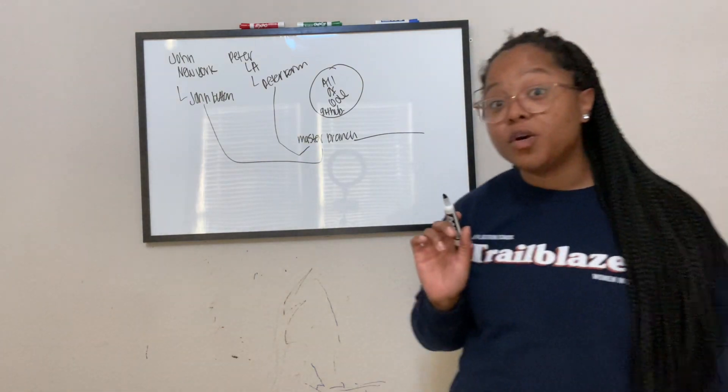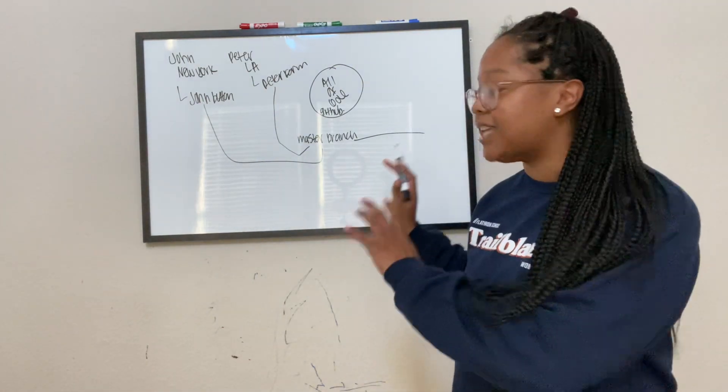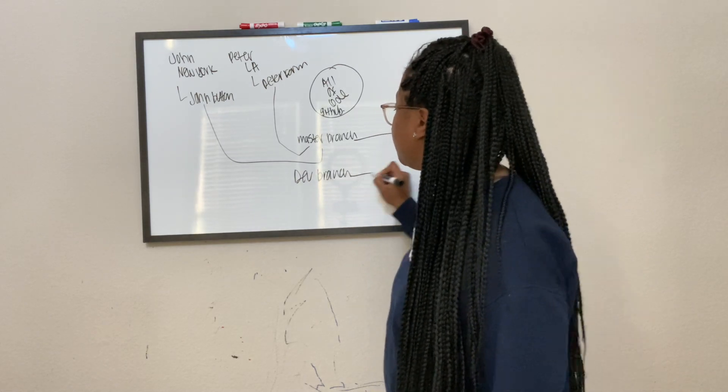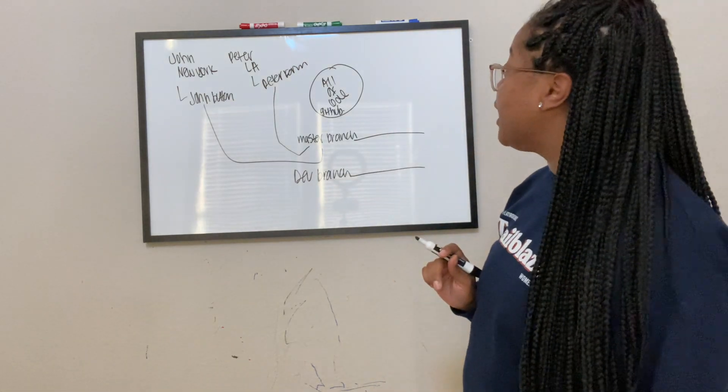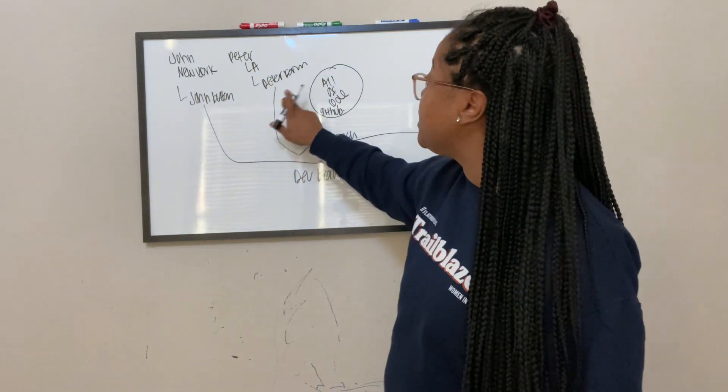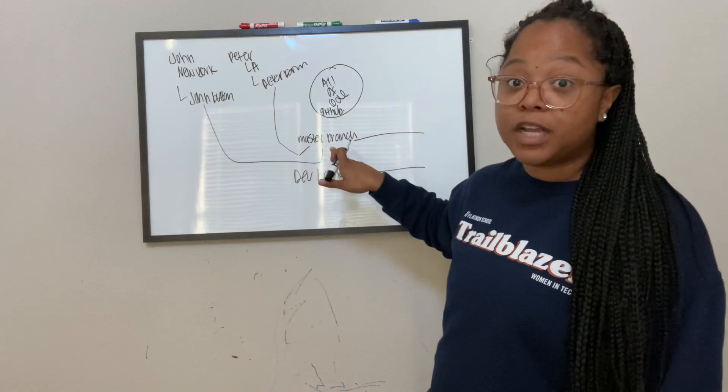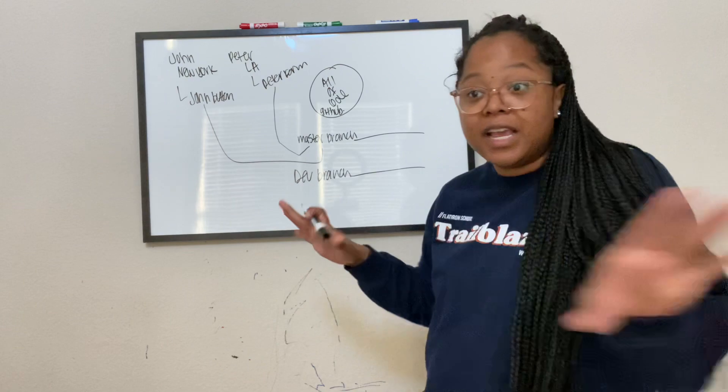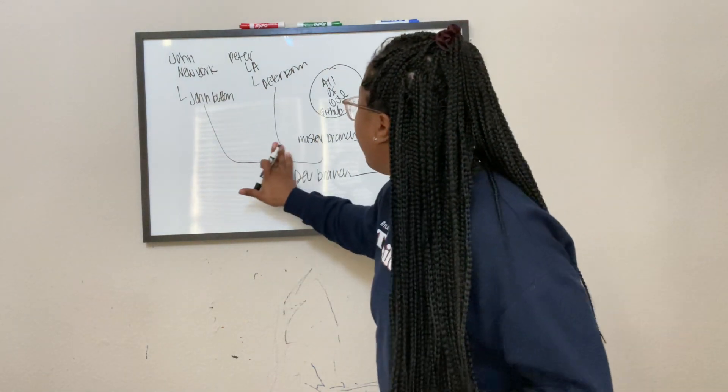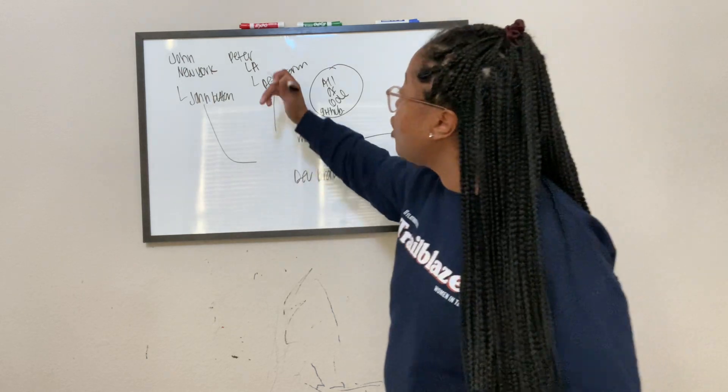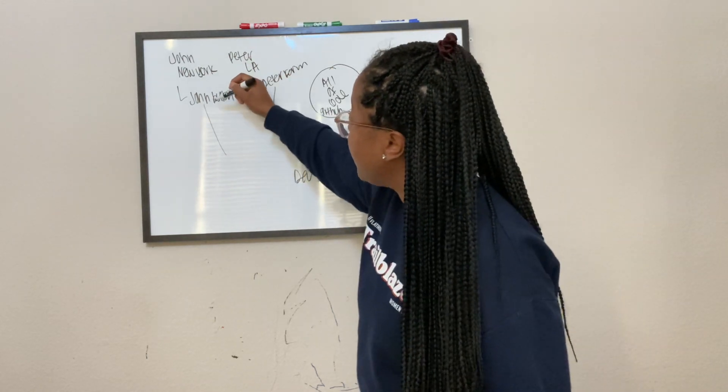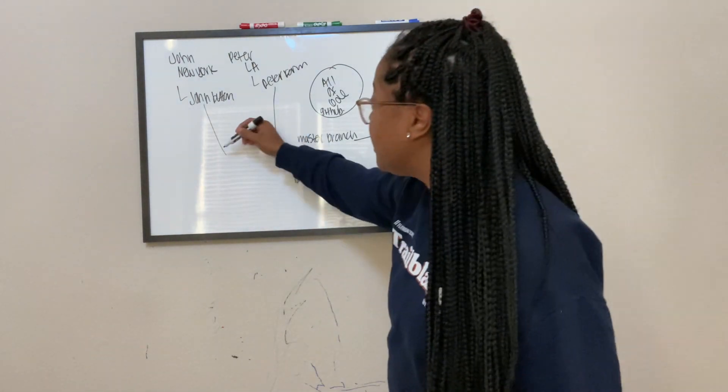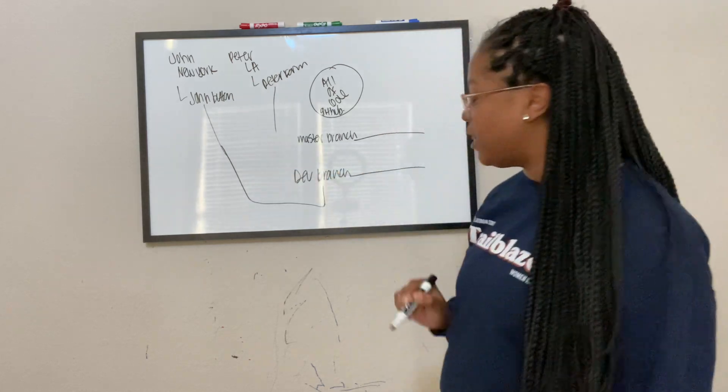But typically, what you'll have outside of a master branch is a developer's branch. I'm calling it a dev branch here. And the reason why you would not want to immediately put these two pieces of code directly into the master branch, because the master branch is like the perfect pristine, that is the code. That's the Bible for the code. It's been tested, it's been tried, it's been true. So typically, what will happen is John would put his branch that holds all of the code for the new button he created, he would put that into the developer branch.